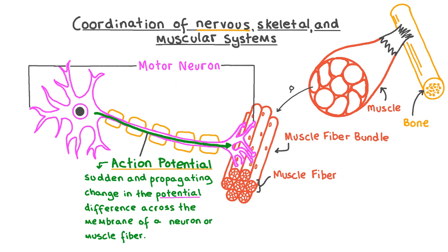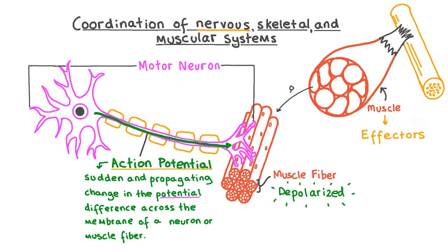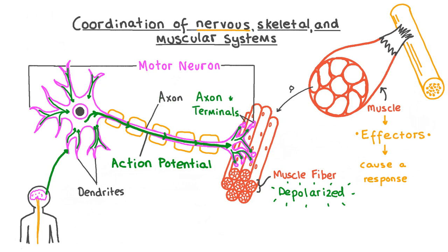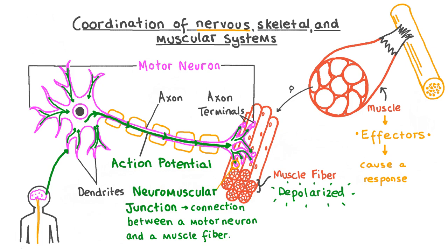Action potentials depolarise the muscle fibres, affecting the electrical charges inside and outside of the motor neuron and stimulating the muscle fibres to contract. Muscles are sometimes called effectors as they cause an effect — sometimes called a response — to occur, and the response in muscles is usually movement. Action potentials are first generated in the dendrites of a motor neuron, stimulated by a signal from the brain or spinal cord. Once gathered, signals travel along a long thread-like structure called the axon, which ends in axon terminals that link the neuron to the muscle fibre. The points where the axon terminals and muscle fibre meet are called neuromuscular junctions, and they allow an action potential to depolarise the muscle fibre, stimulating it to contract.